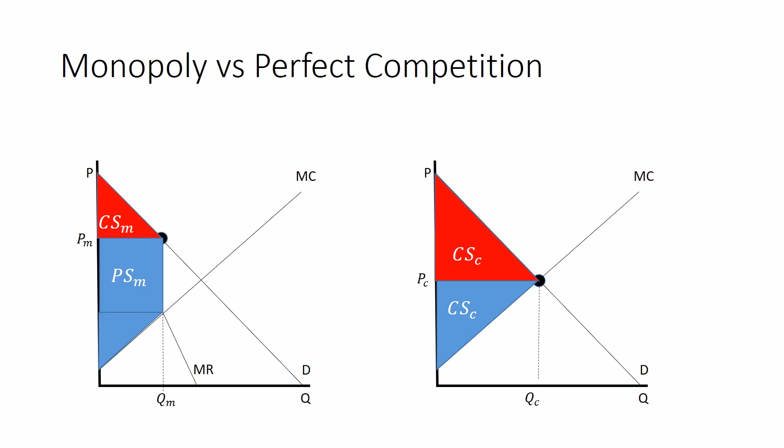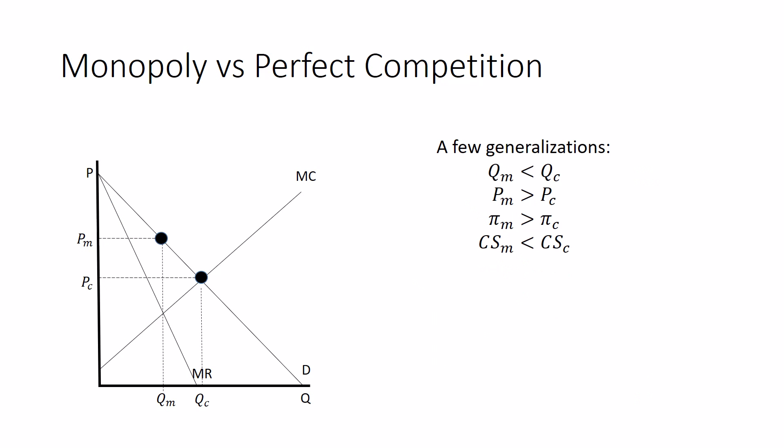So let's put a couple more of our generalizations on here. Back looking at this picture, consumers lose under monopoly and the firm wins. Consumer surplus is less as a monopoly than under competition. And producer surplus is more with monopoly than with competition.